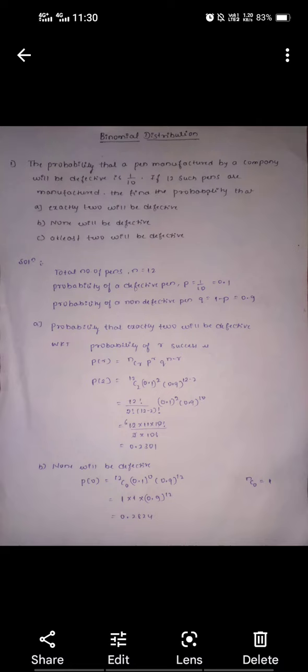find the probability that: A) exactly 2 will be defective, B) none will be defective, C) at least 2 will be defective.